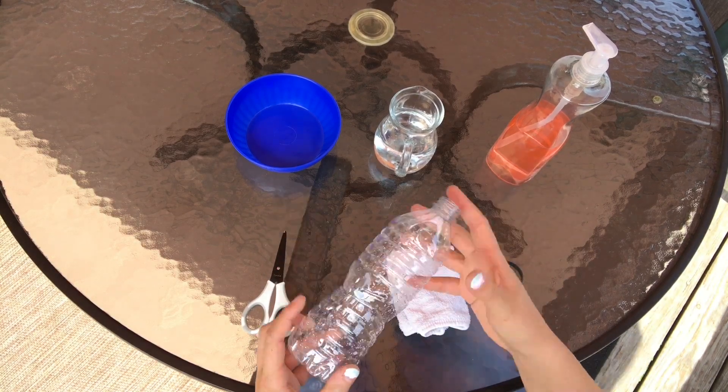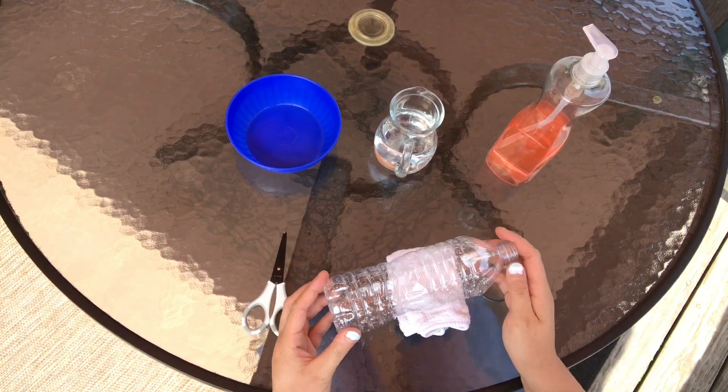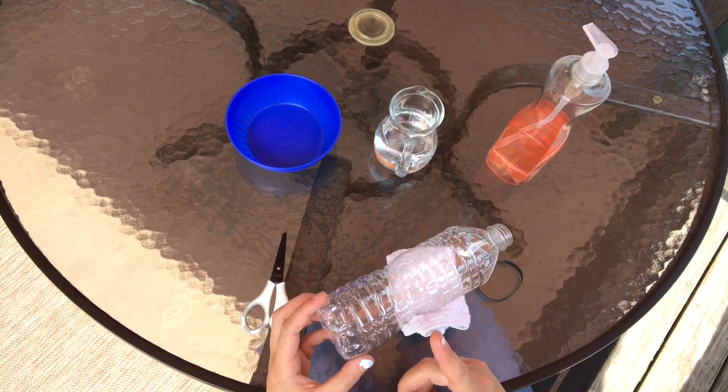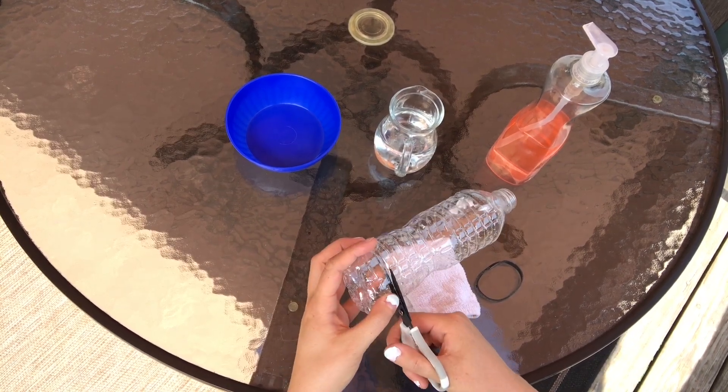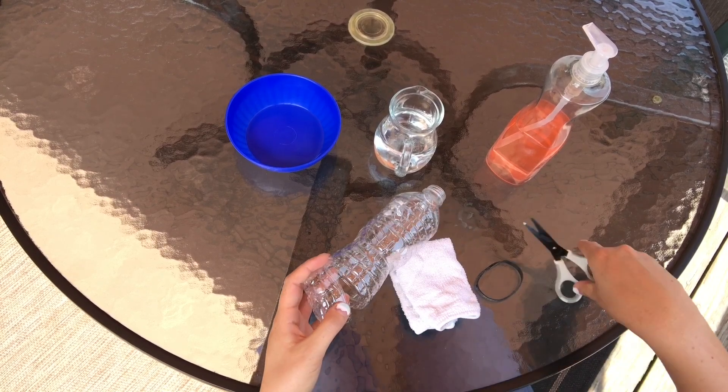washcloth and a rubber band. So the first step to making your bubble machine is to use your scissors to cut right along the bottom to take the bottom of the water bottle off.